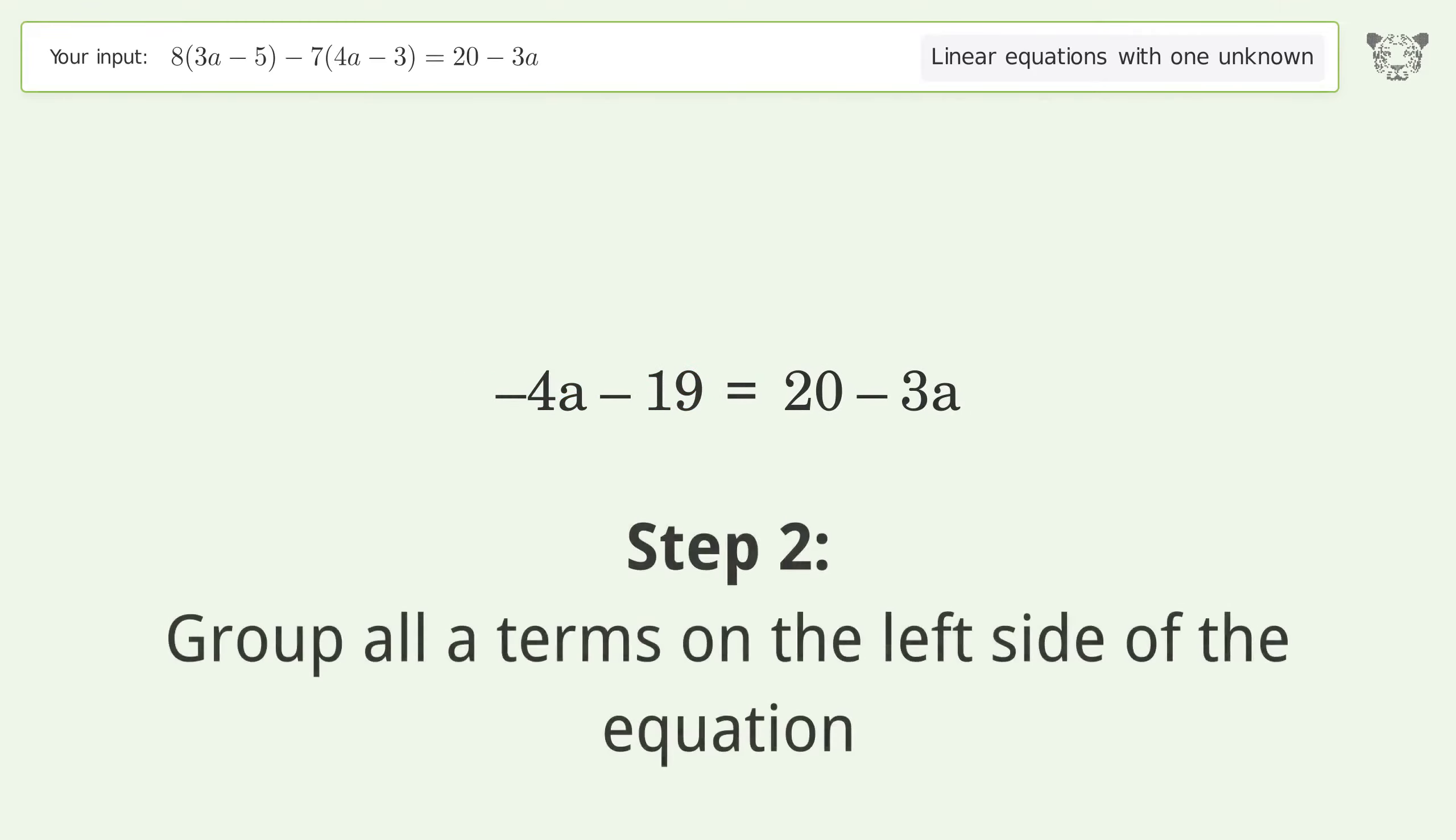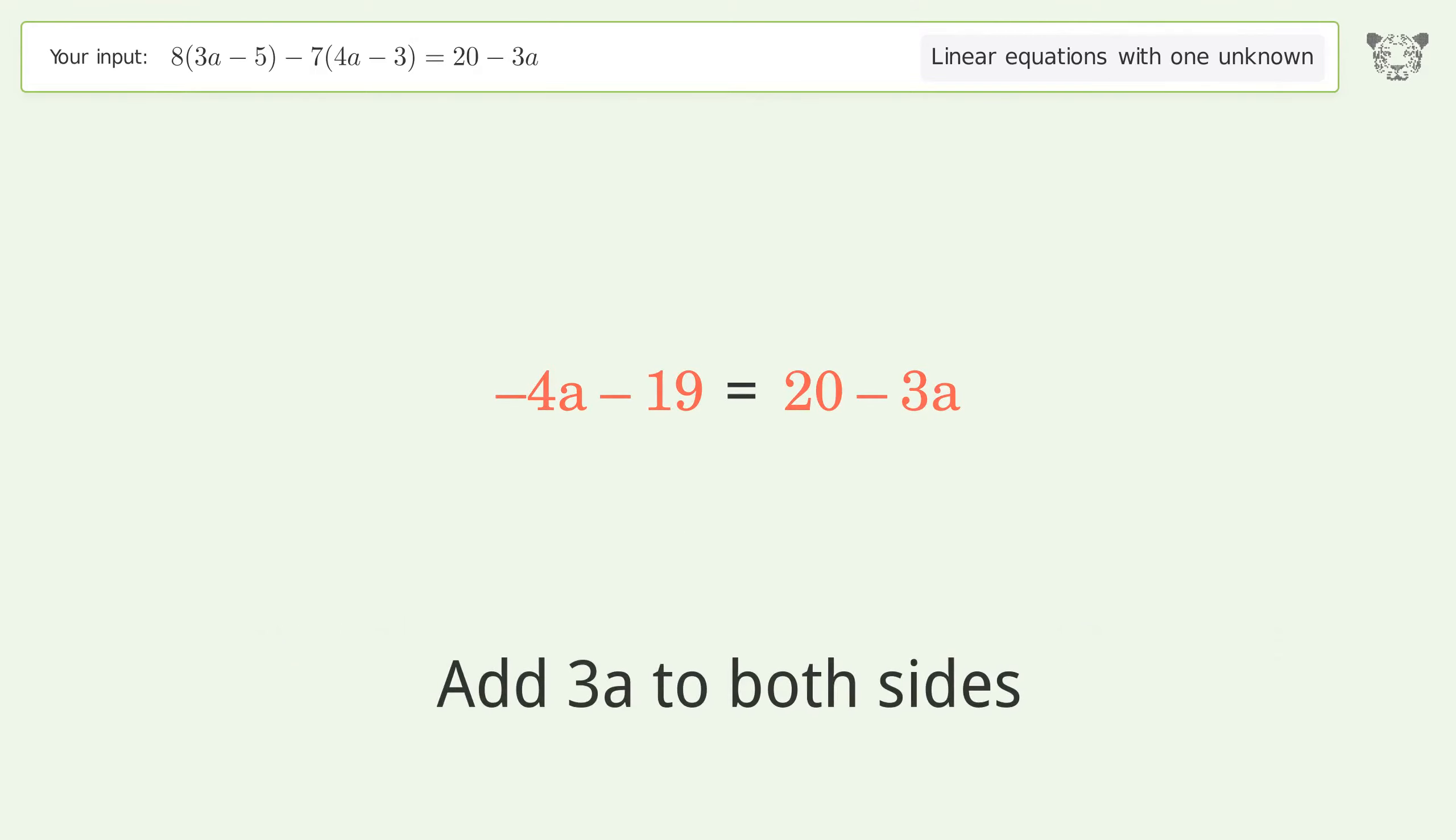Group all a-terms on the left side of the equation. Add 3a to both sides. Group like terms. Simplify the arithmetic.